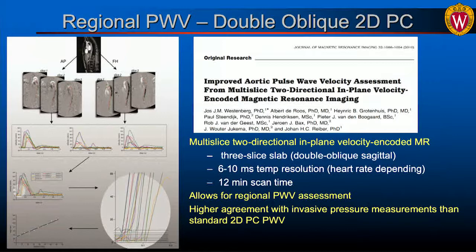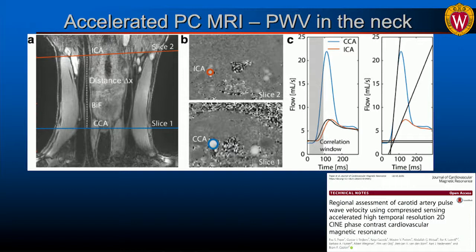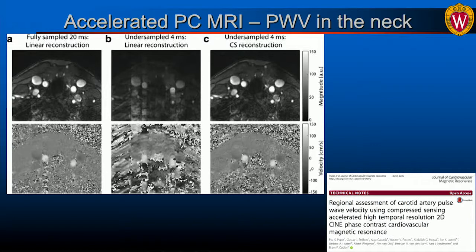There is no true gold standard for pulse wave velocity measurements unless invasive pressure measurements with accurate distance measurement are used, which is done in animal studies or in patients already undergoing catheterization. Another study from the Netherlands by Efa Peppers used accelerated 2D phase contrast imaging for pulse wave velocity in the carotid arteries, where distances are shorter and vessels are stiffer. Very high temporal resolution was needed — achieved with compressed sensing, bringing temporal resolution down to around 4–5 milliseconds.